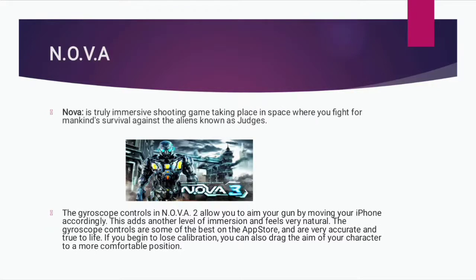NOVA is a truly immersive shooting game taking place in space where you fight for mankind's survival against aliens known as judges. The gyroscope controls in NOVA allow you to aim your gun by moving your iPhone accordingly, adding another level of immersion that feels very natural. The gyroscope controls are some of the best on the App Store, very accurate and true to life. If you begin to lose calibration, you can drag the aim of your character to a more comfortable position.